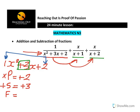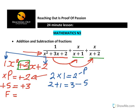The next step is to find two numbers that when multiplied give 2, and when added give 3. Looking at the factors of 2: which two numbers multiply to give 2? That is 2 times 1, giving a product of 2. And 2 plus 1 gives a sum of 3. So the two numbers are positive 2 and positive 1.